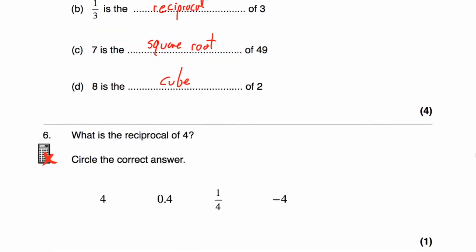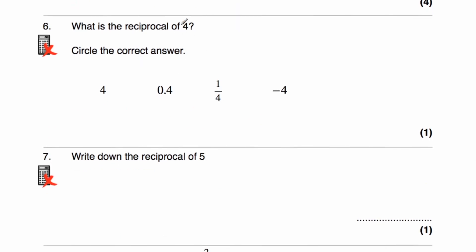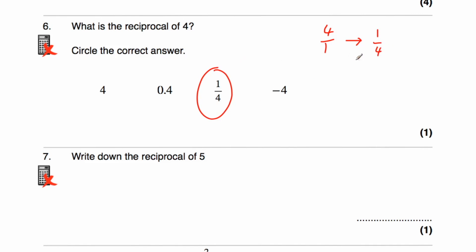Question 6: what is the reciprocal of 4? What number do we multiply 4 by to get a whole? 4 times a quarter gives 4 quarters, which is a whole. So the answer is a quarter. Another way: 4 is 4 over 1, and flipping it over gives 1 quarter. So the reciprocal of 4 is 1 quarter.